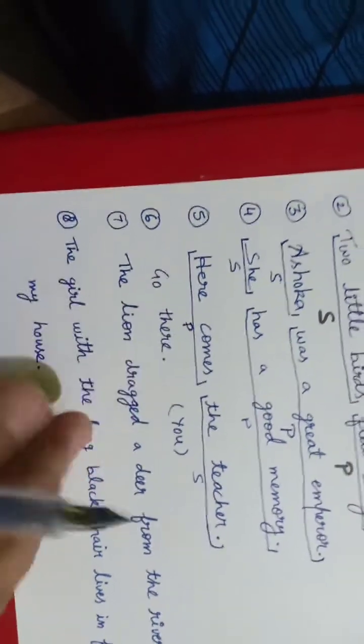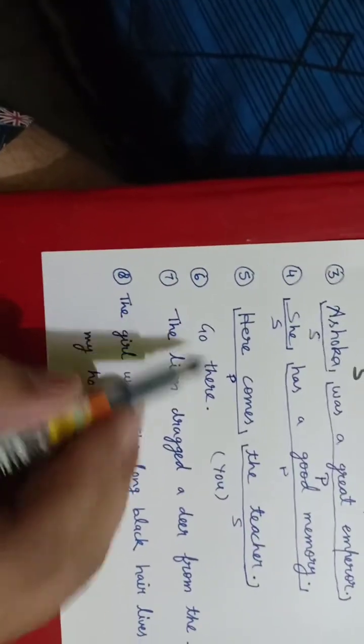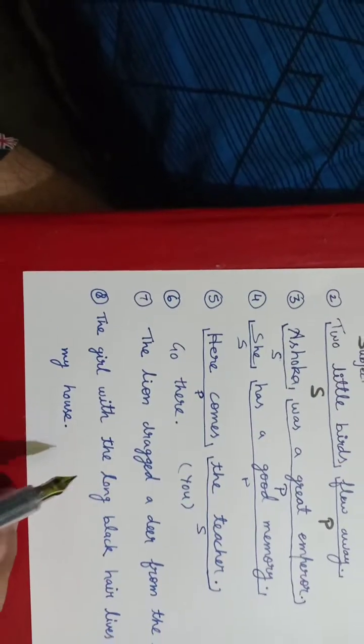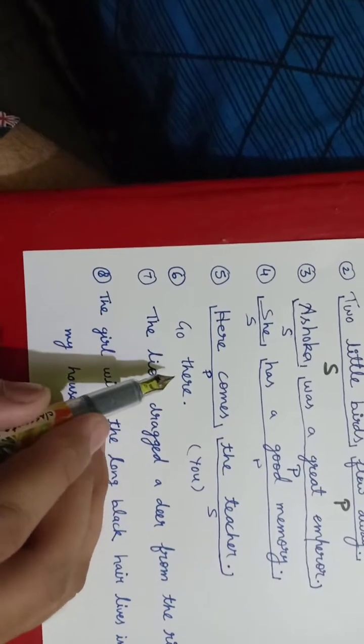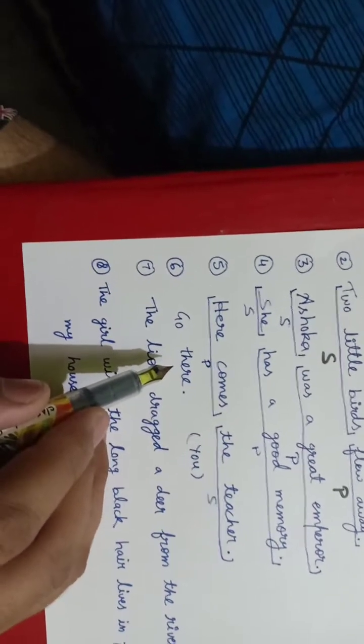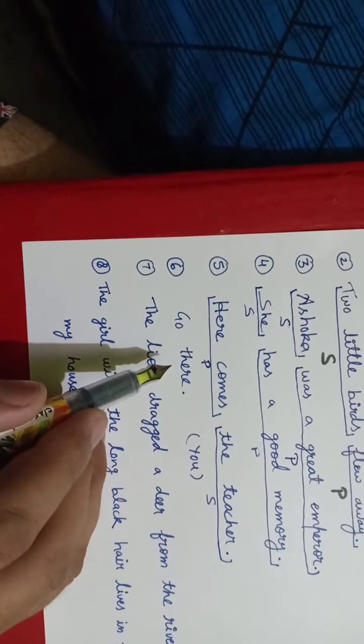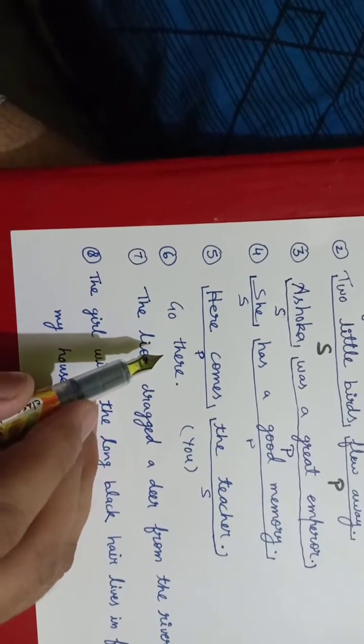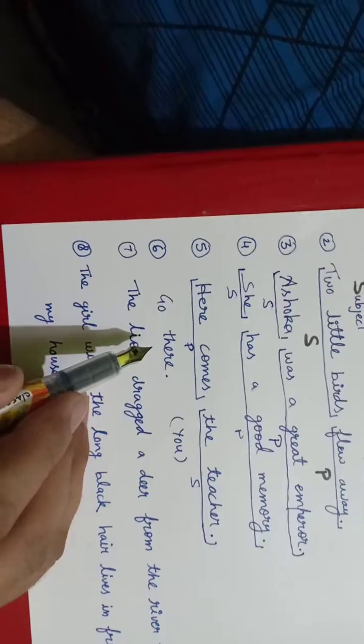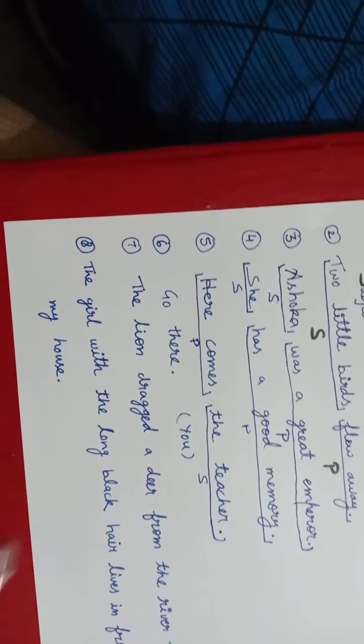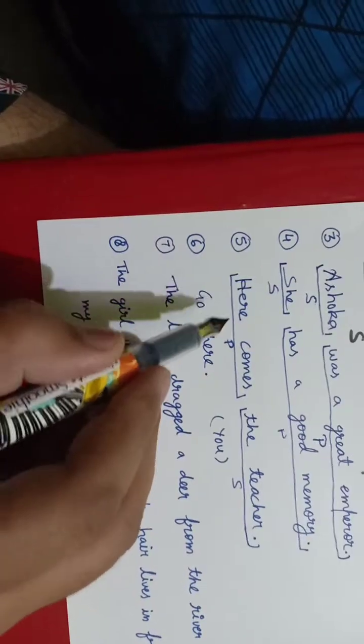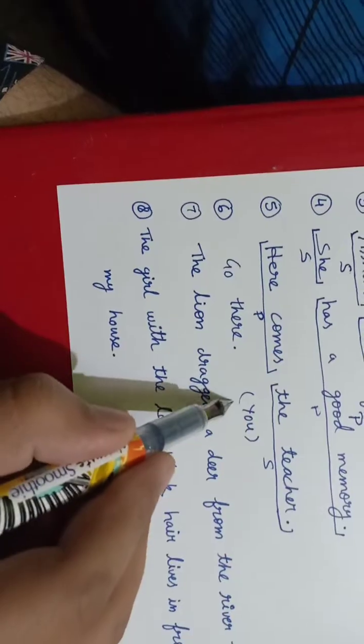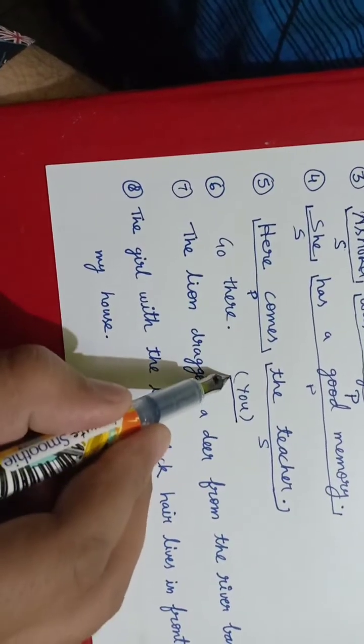This is an interesting sentence: Go there. Actually, this is an imperative sentence. The imperative sentence is in which we have orders, requests, commands, advice, suggestions, etc. These things we give. This subject is hidden. So, when we give you the order or command, the subject is hidden. So, hidden subject.